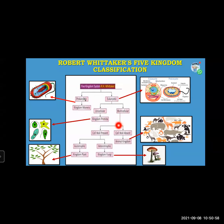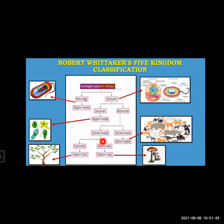Multicellular was further classified on the basis of cell wall. If the cell wall is present, that is a plant cell; if the cell wall is absent, cell wall is absent in animal cells. The organisms with cell wall present were further classified on the basis of nutrition as autotrophic and heterotrophic. Autotrophic plants prepare their own food, so kingdom Plantae was included in autotrophs. Heterotrophic organisms cannot prepare their own food — so kingdom Fungi, as fungi depends upon dead and decaying matter, is included in heterotrophic. And kingdom Animalia, as cell wall is absent, is included here. This is how Robert Whittaker's five kingdom classification was done.